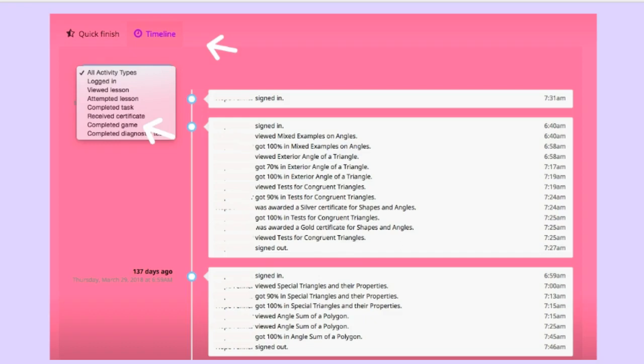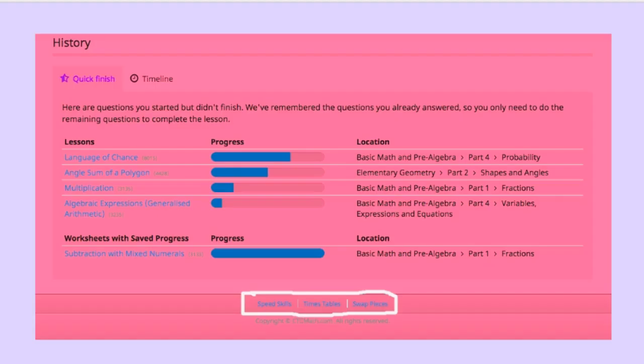Just to jump back for a moment to that list of items in a timeline format, did you catch that completed game item? That's a fun one because we all know that all work and no play makes for a dull program. On the bottom of pretty much each page you'll see three little links: speed skills, times tables and swap pieces and that's the fun part to CTC.